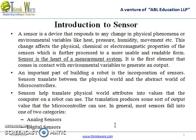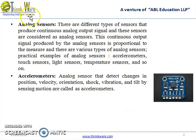There are two types of sensors: analog sensors and digital sensors. First, we will discuss analog sensors and their examples. There are different types of sensors that produce continuous analog output signals, and these are called analog signals.